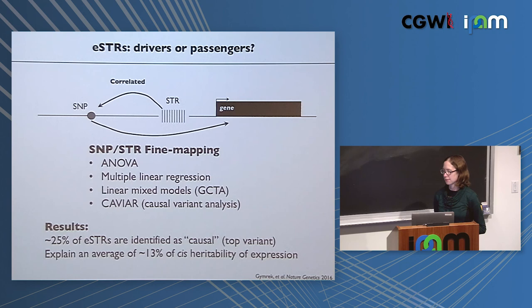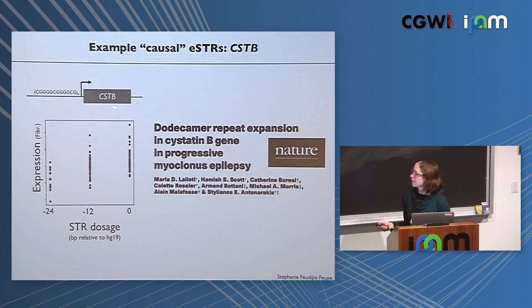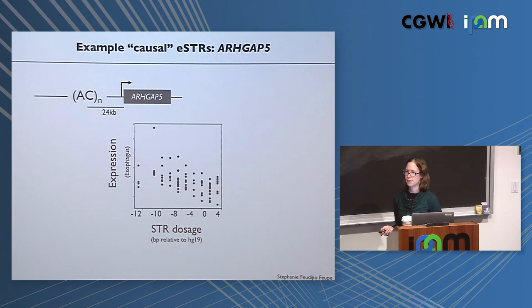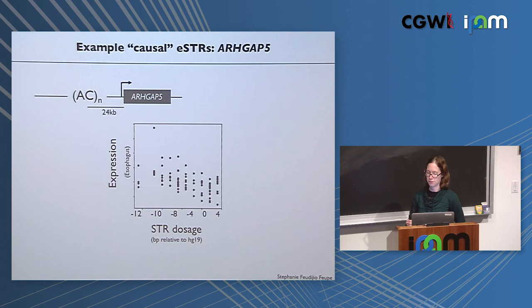Some example 'causal' STRs that consistently emerge: one favorite is a 12-mer repeat in a gene's promoter that clearly explains expression better than any nearby SNP, and is already known as a pathogenic locus. More exciting are highly multiallelic ones showing a clear allelic series — STR length versus expression with many different alleles. These highly multiallelic associations are hard to explain as tagging SNPs. But many associations do turn out to be tagging nearby SNPs, which is a general issue in eQTL and GWAS studies.